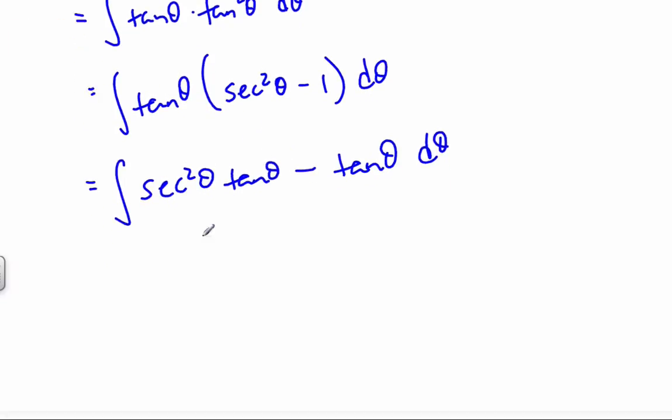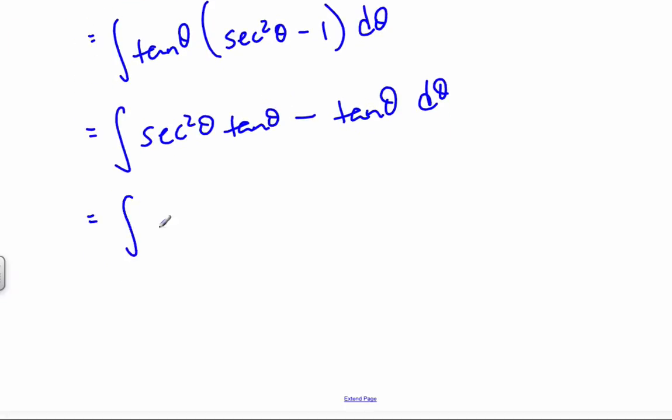I have my tanθ times sec²θ minus 1 dθ. Well, multiplying in the tangent, I get sec²θ tanθ minus tanθ dθ. And again, what I'll do is I will break up my integral signs. Sec²θ tanθ dθ minus tanθ dθ.